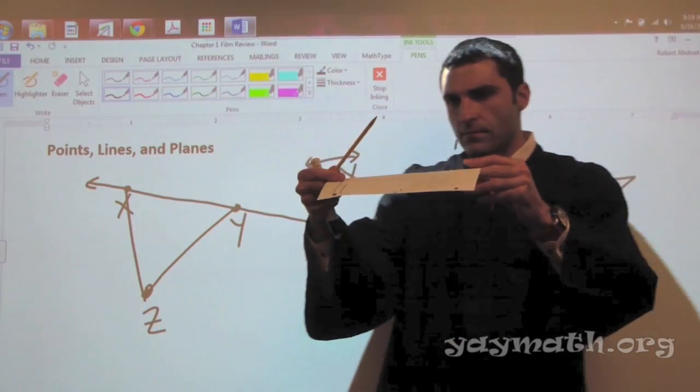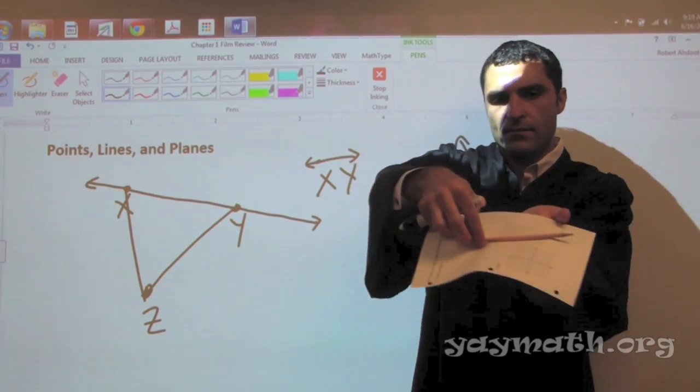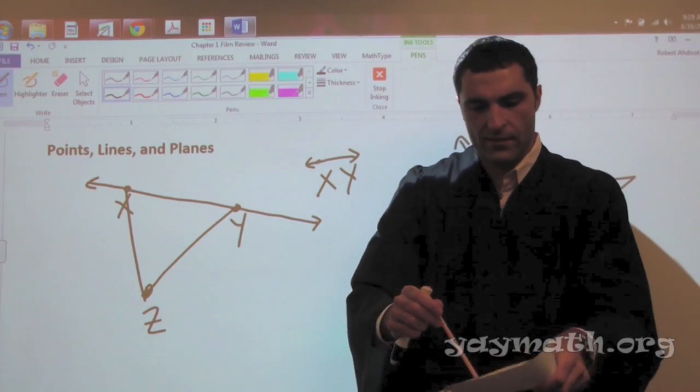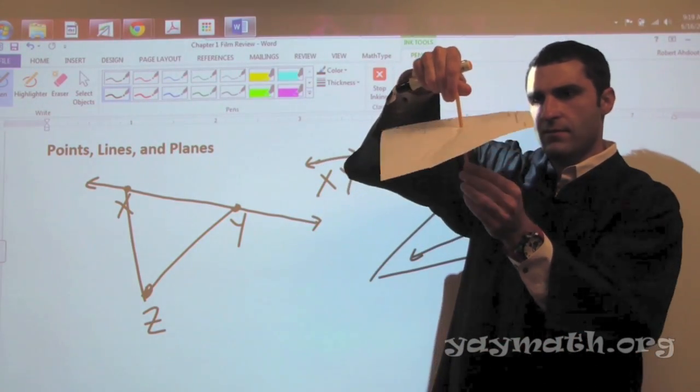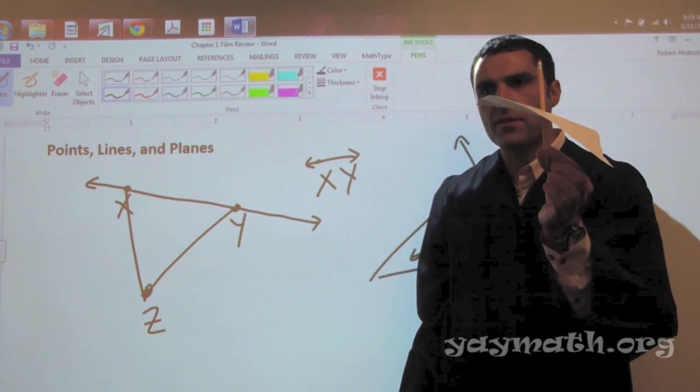That would mean if I had a sheet of paper and I poked a hole straight through it, something like that. And then here. So here's my plane, for example. This would be a line on the plane. This would be a line through the plane, represented like that. Any questions?